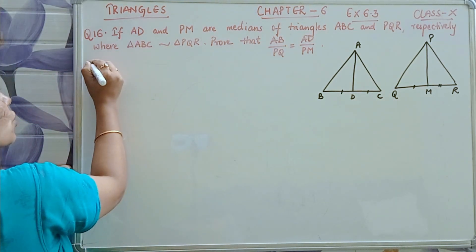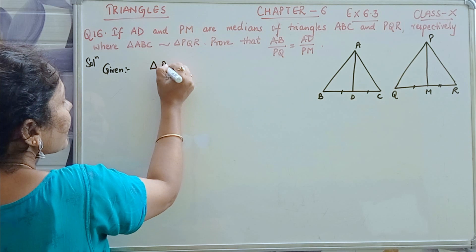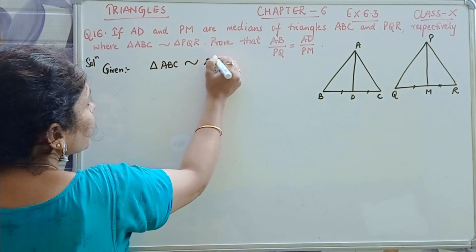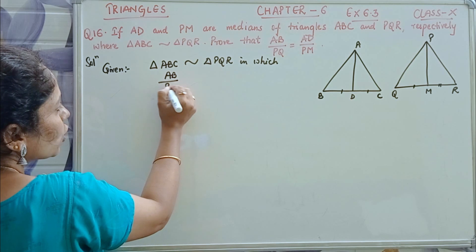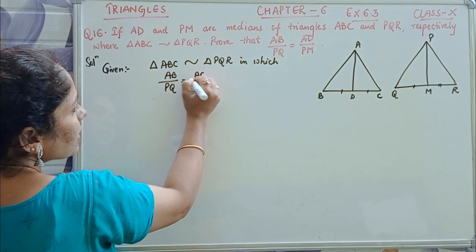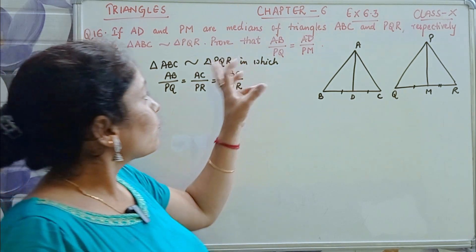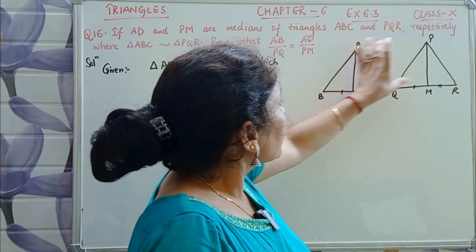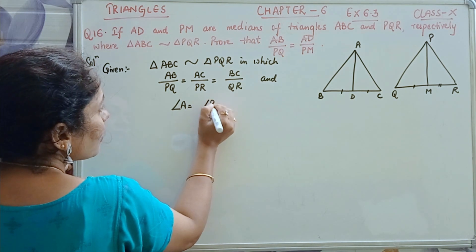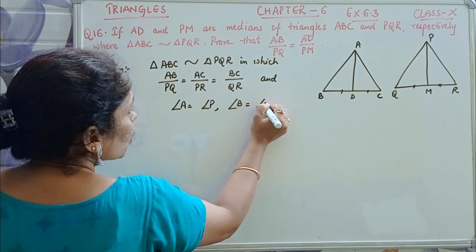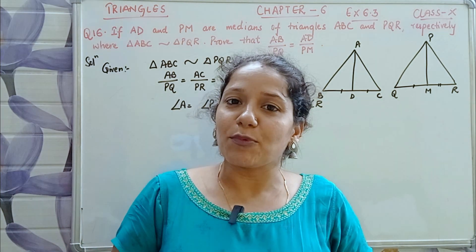Now let's write the given information. Given: triangle ABC is similar to triangle PQR. When two triangles are similar, their corresponding sides are in proportion: AB by PQ equals AC by PR equals BC by QR. Also, corresponding angles are equal: angle A equals angle P, angle B equals angle Q, angle C equals angle R.